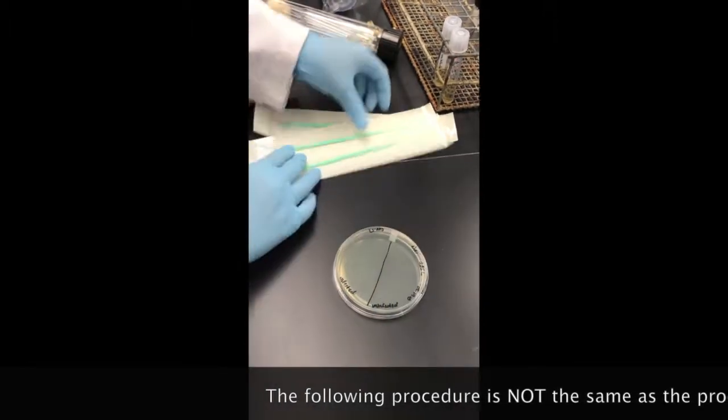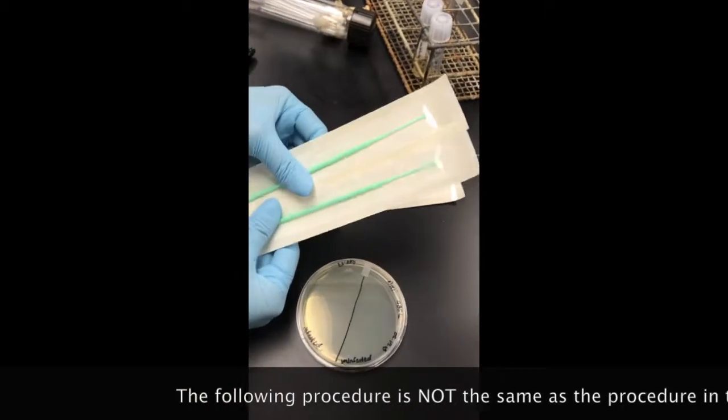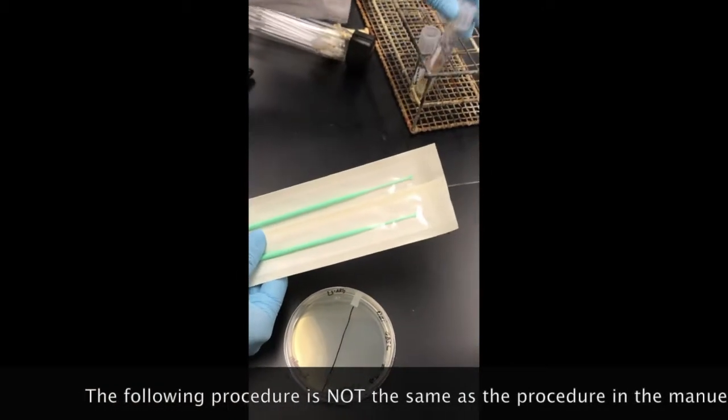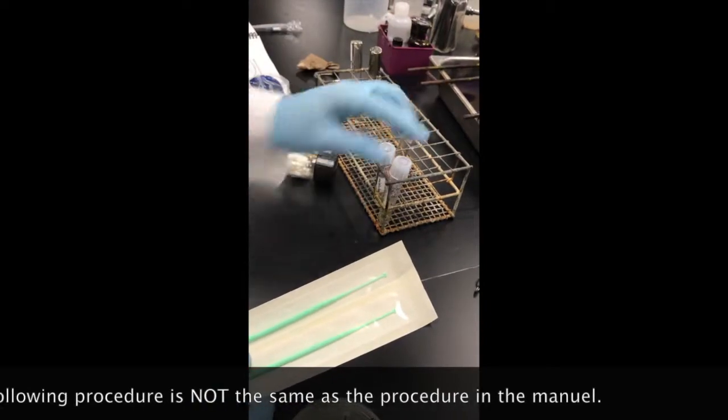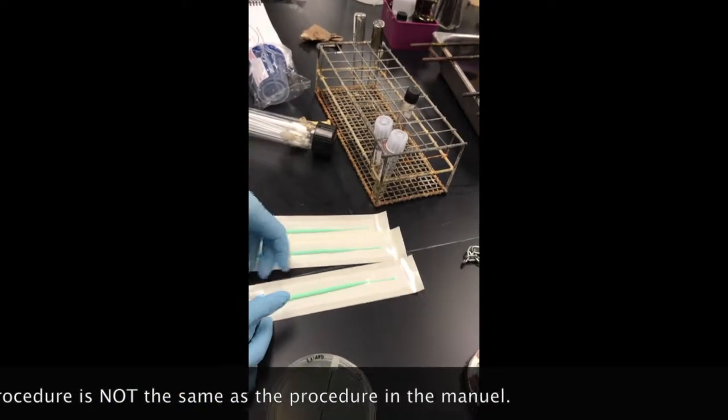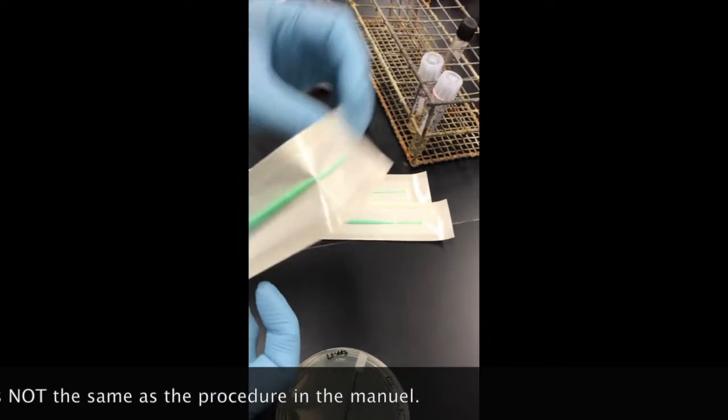And what you're going to do is you're going to use these pre-calibrated loops to add the right amount of each sample onto the plate. And be careful not to break your loop because then you can't use it.